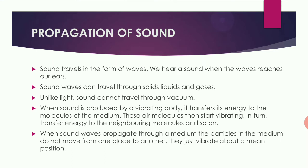Propagation of sound — how do sound waves travel? Sound waves travel in the form of waves, and we hear a sound when the wave reaches our ear. Sound waves can travel through solids, liquids, and gases. Unlike light, sound cannot travel through vacuum. When sound is produced by a vibrating body, it transfers its energy to the molecules of the medium, and those molecules start vibrating in turn, transferring energy to neighboring molecules.